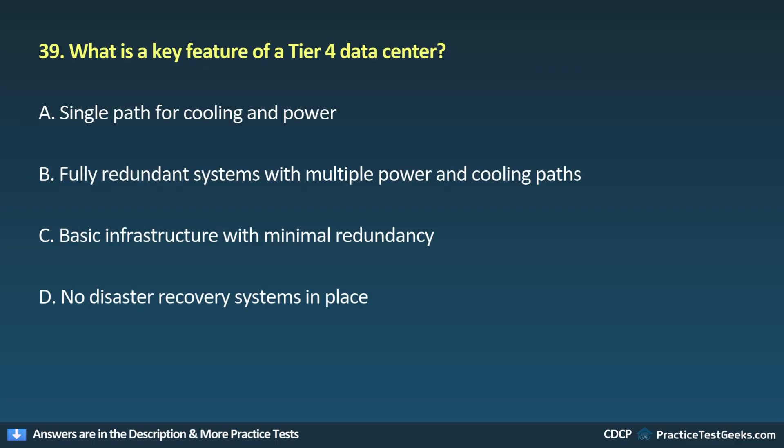Question 39. What is a key feature of a tier 4 data center? A. Single path for cooling and power. B. Fully redundant systems with multiple power and cooling paths. C. Basic infrastructure with minimal redundancy. D. No disaster recovery systems in place.